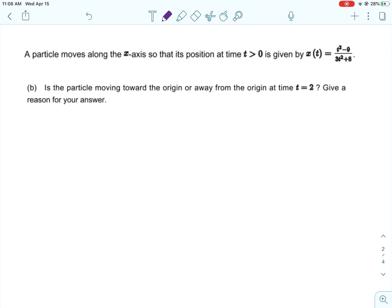Then the next question, we want to know, is the particle moving toward the origin or away from the origin at time t equals 2? So there's two things we need to know. We need to know which direction the particle is moving, and we need to know the position of the particle. And you can find them in any order that you want to.